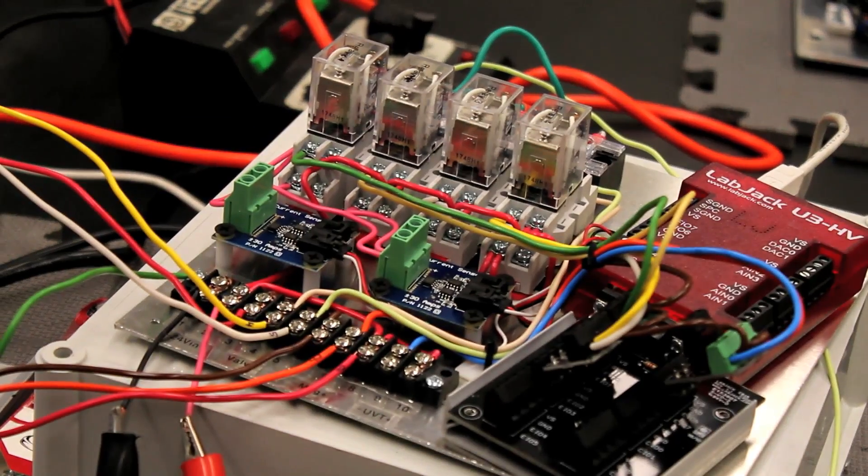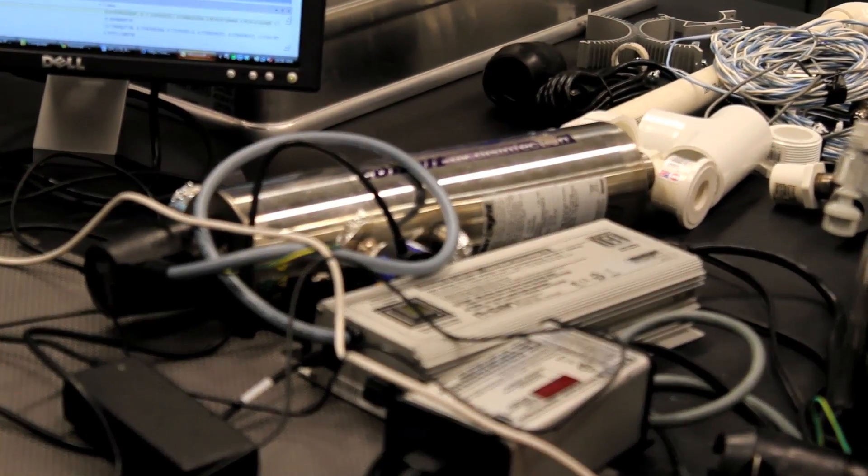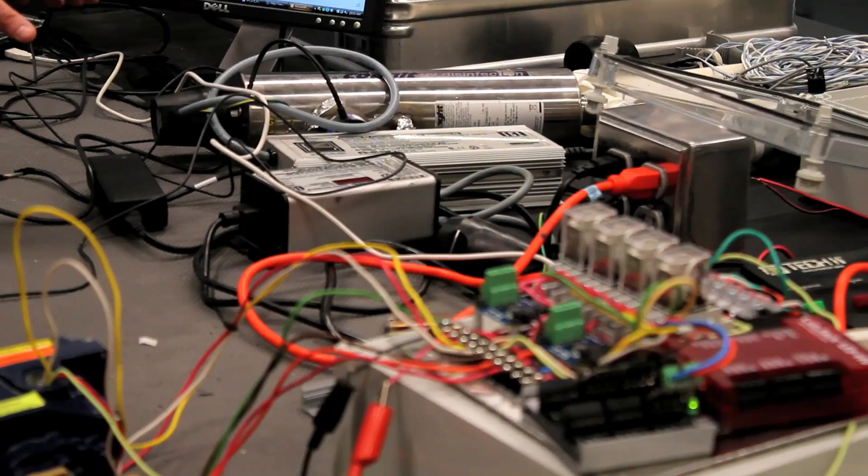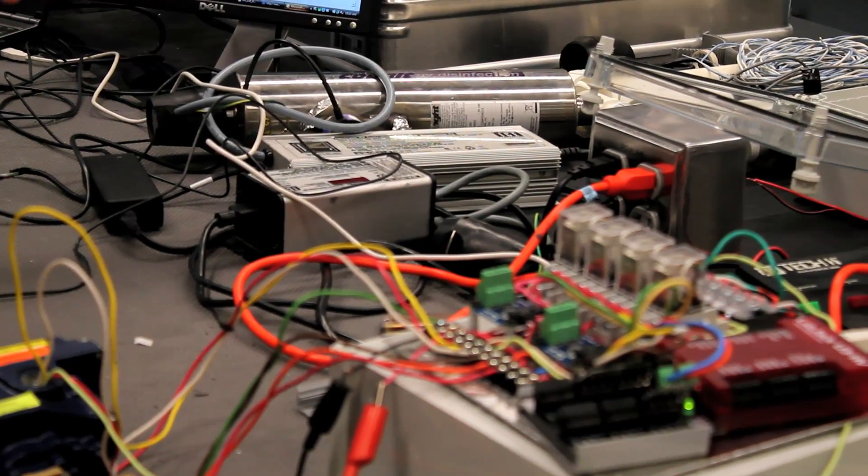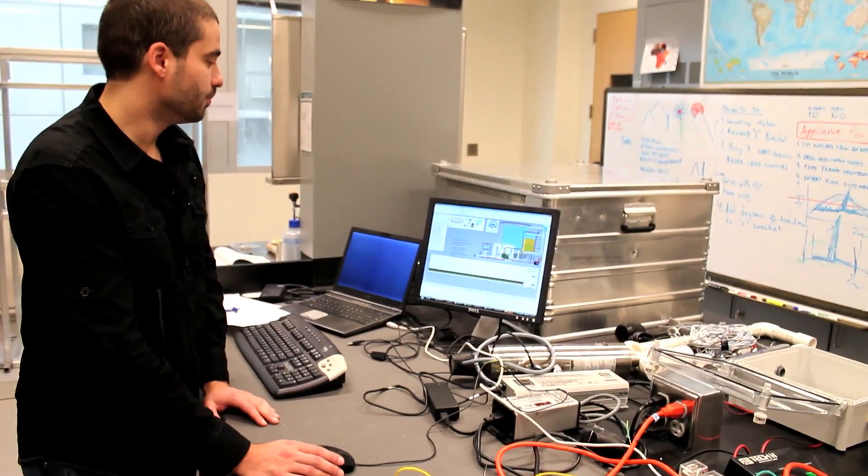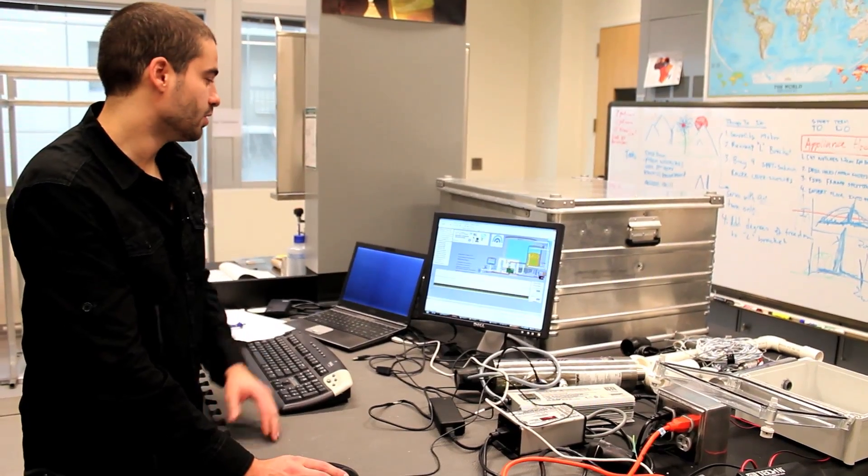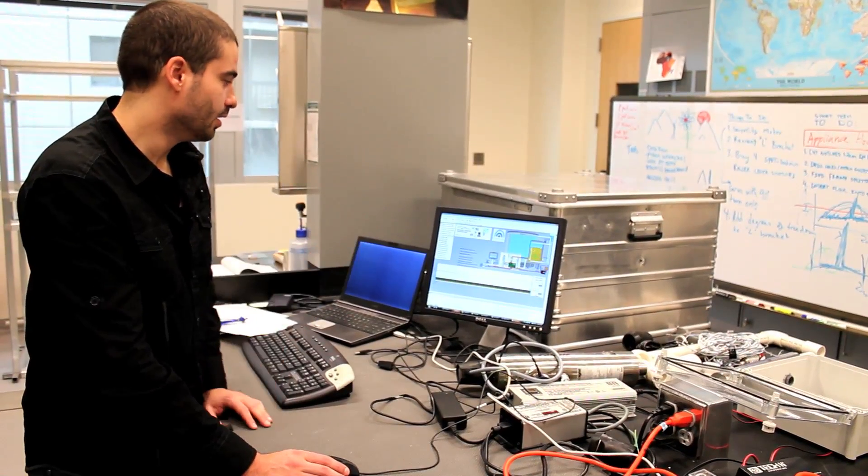These are just the electronic components that control those. These are the UV lights that actually decontaminate the water. They disrupt the DNA of the bacteria essentially. There's an actual working UV decontamination box in Rwanda right now that's controlled from a screen exactly like this one.